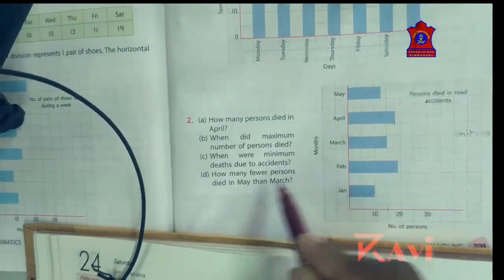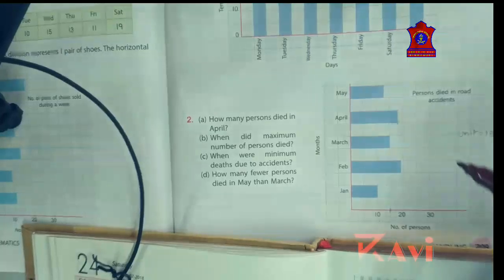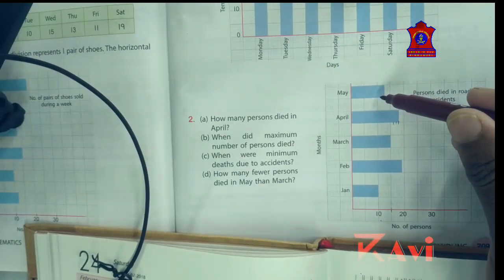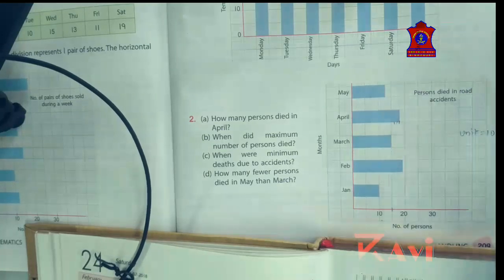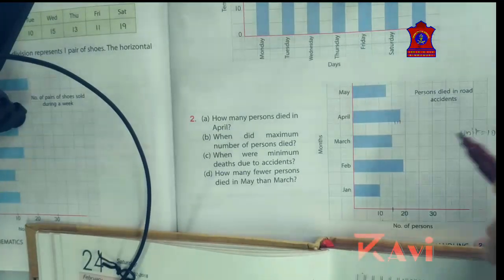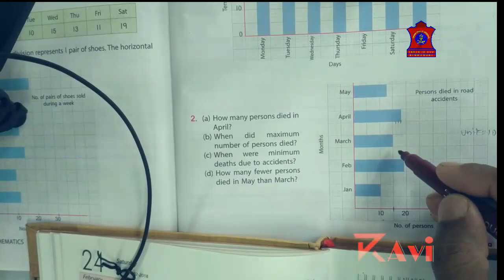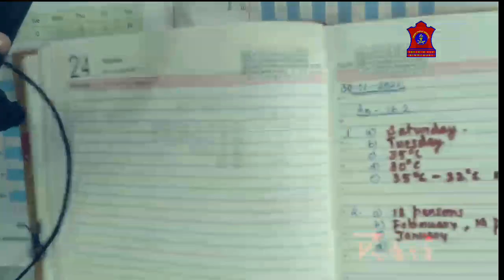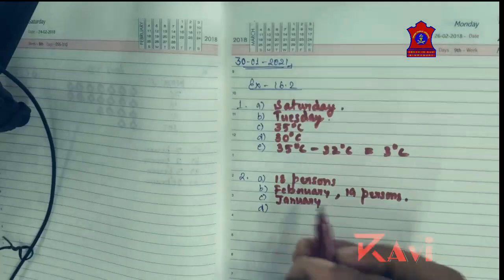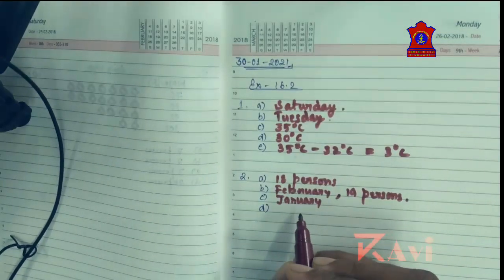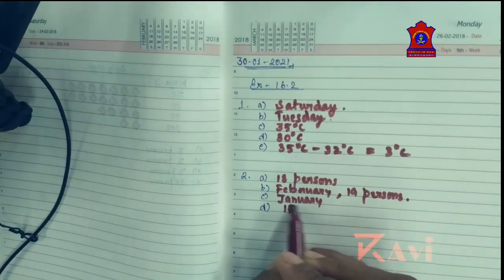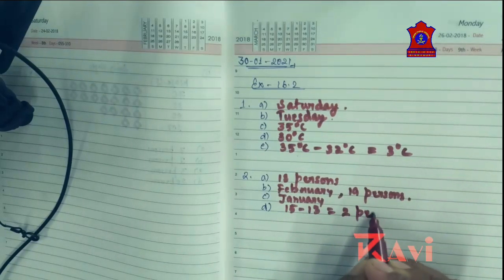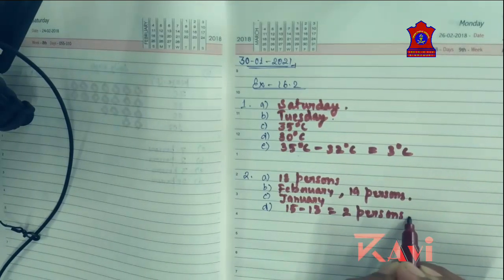How many fewer persons died in May than March? May has 13 persons and March has 15. Find the difference: 15 minus 13 equals 2 persons. The difference is 2 persons.